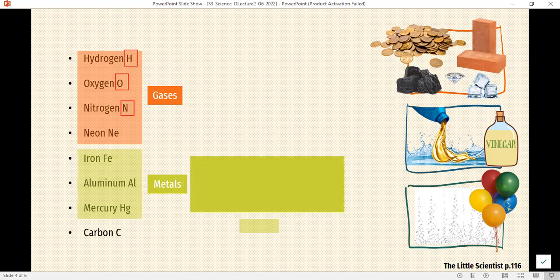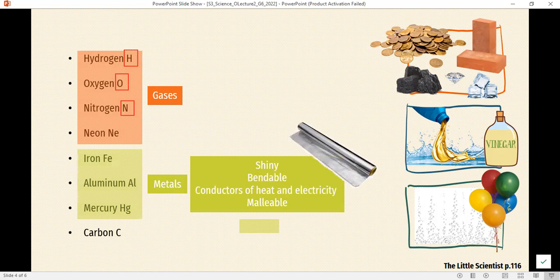You know, metals are shiny. They are good conductors of heat and electricity. We can bend them. They are used in lots of things. Look at this foil, it is made of metals too.